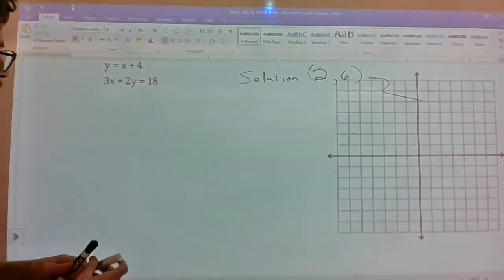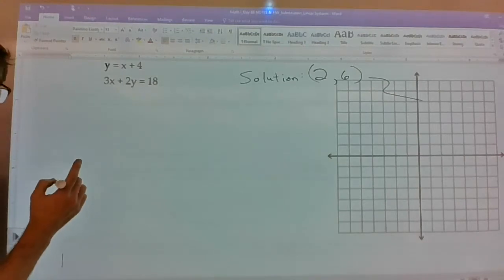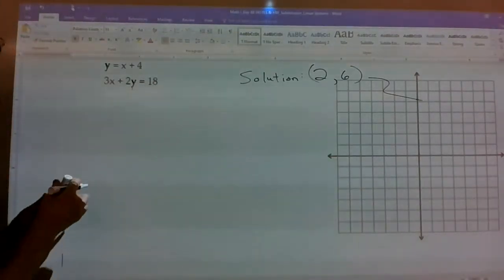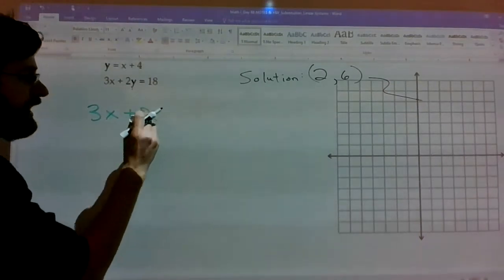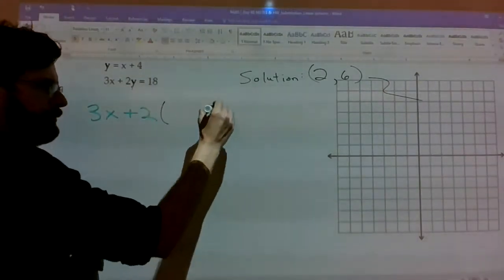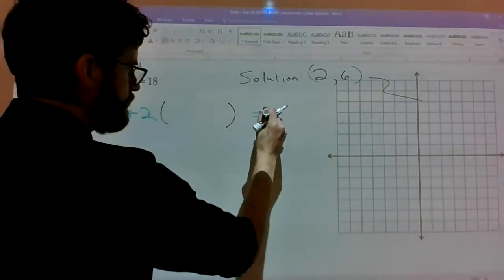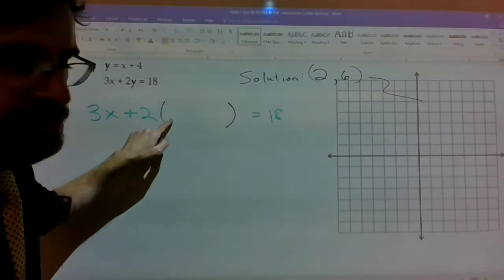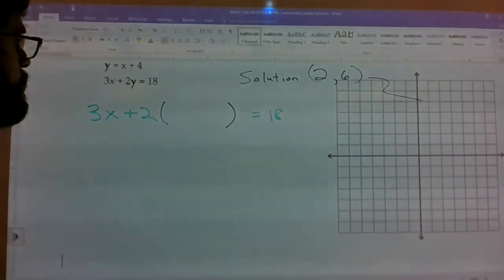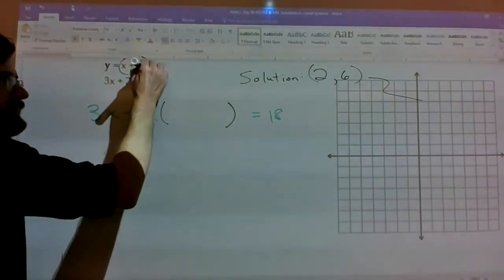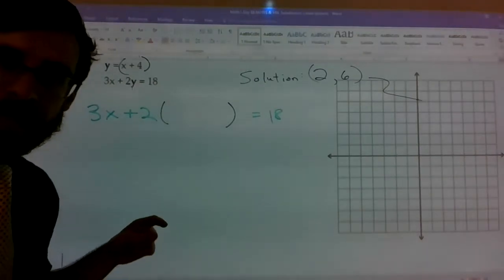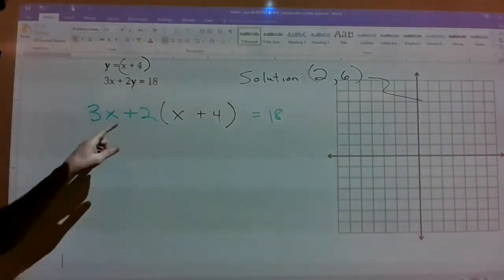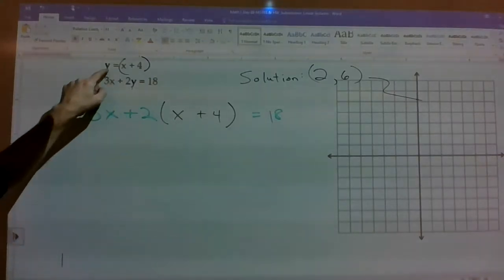Substitution basically states that the y that lives here is the exact same y value that's here. So what you do is you say, I'm going to totally rewrite 3x plus 2, but instead of putting a y there, I'm going to put a blank space. And it equals 18. So 3x plus 2 times instead of y, I'm just going to put a blank spot in place of the y equals 18. Well, we know that y equals x plus 4. If y equals x plus 4 in the first equation, then y equals x plus 4 in the second. So all I did was I said, that y that was next to the 2 is now being replaced by the y equals x plus 4.